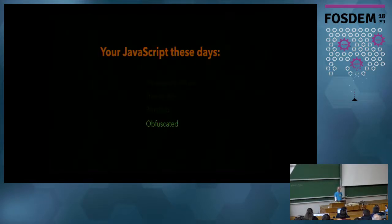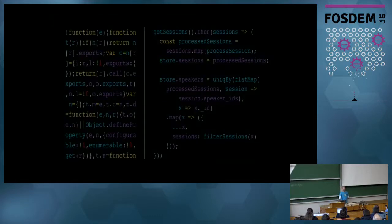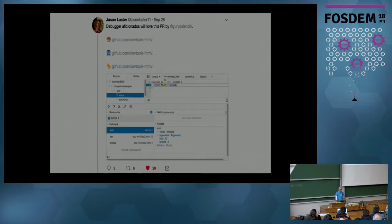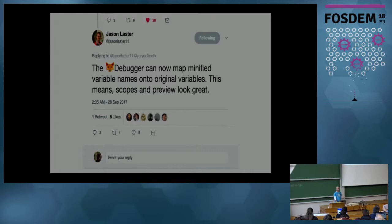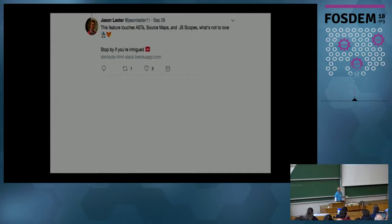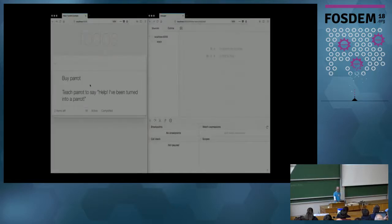Obfuscated code is a bit of a problem to debug. You'd really like to debug the original code, not the generated one. Let me tell you a story about mapped expressions. Jason Lester, one of the developers of the debugger, tweeted: 'I will love this PR by Yuri Delany — how the debugger can now map minified variable names onto original variables, meaning scopes and preview look great. Next up is watch expressions. This feature touches ASTs, source maps, and JS scopes.'